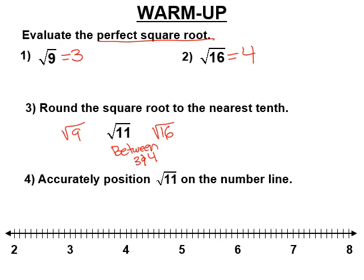The number 11 is just 2 away from 9, but 5 away from 16. So we're going to round the square root of 11 to the nearest 10th. The square root of 10 would be the one that's 3.1. The square root of 11 is going to be 3.2 or 3.3 — I'm going to guess 3.3. Let's see how that goes.